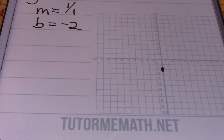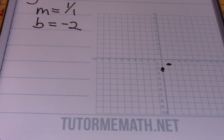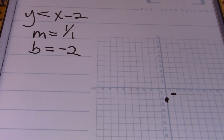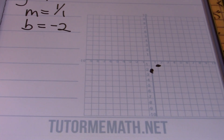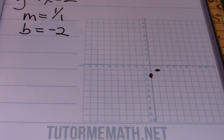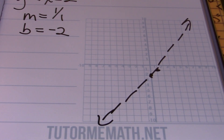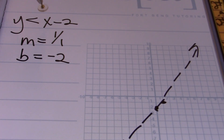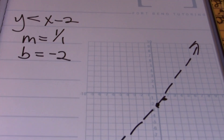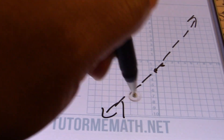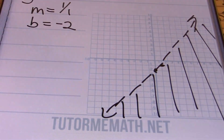The y-intercept is negative 2, so I put a point at negative 2 on the y-axis. Using the slope, I go up 1 and over 1 to find an additional point. I graph this with a dashed line because I have a less than symbol. Using the origin as a test point: is 0 less than negative 2? That's false. So I'll shade on the other side of the line — over on the right side.